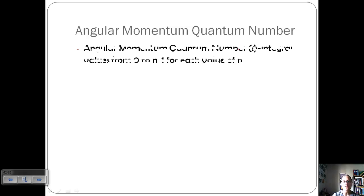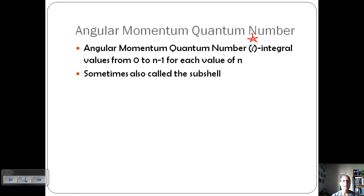Let's talk about those letters. Our next quantum number is the angular momentum quantum number and that's represented with a lowercase l. These are integral values also from zero to n minus one for each value of n. So if n is 3, l is 0, 1, or 2. Sometimes these are also called the subshells and these give information on the shape. So n gave information on size and energy, l gives information on shape.